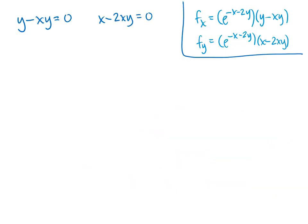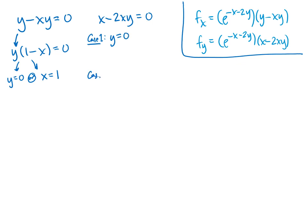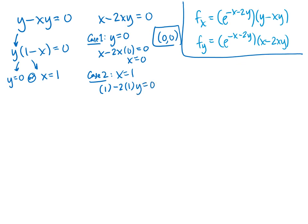We can factor a y out of y minus xy to get y times (1 minus x) equals 0. That means either y equals 0, or 1 minus x equals 0, giving x equals 1 — two cases. In case one, y equals 0: plugging into the second equation gives x equals 0, so the point (0, 0). In case two, x equals 1: plugging into the second equation gives 1 minus 2y equals 0, so y equals 1/2. That gives us the critical point (1, 1/2).